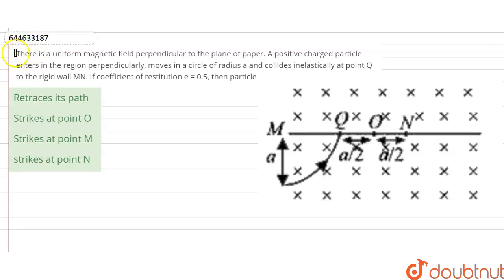Hello students, welcome to Doubtnet. Our question is there is a uniform magnetic field perpendicular to the plane of paper.